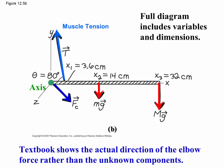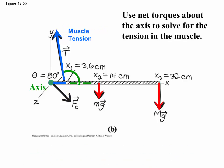The full diagram of course includes variables and dimensions so that we can do our calculation. I want to point out that this diagram from the textbook example shows the actual direction of the elbow force rather than the unknown components that I prefer to use when solving a problem. We then use net torque about that axis to solve for the tension in the muscle in terms of the gravitational torques produced by the weight of the arm and the weight of the pumpkin.